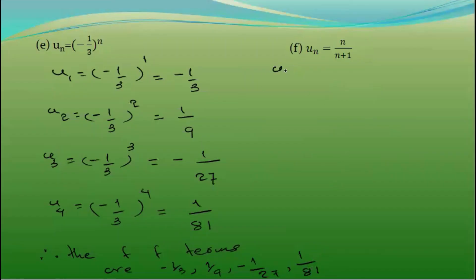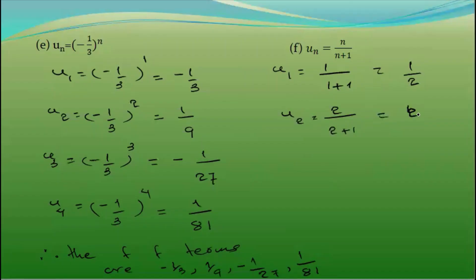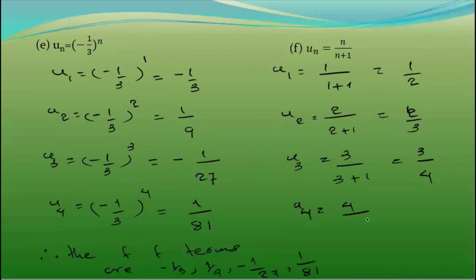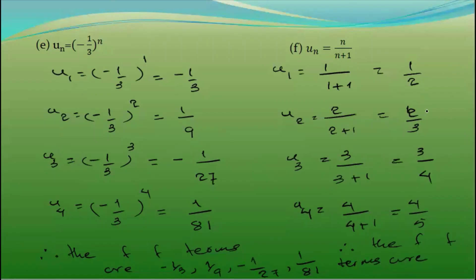UN = N/(N+1). So U1 = 1/(1+1) = 1/2. U2 = 2/(2+1) = 2/3. U3 = 3/(3+1) = 3/4. U4 = 4/(4+1) = 4/5. Therefore the first four terms are 1/2, 2/3, 3/4, 4/5.